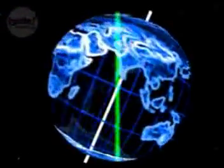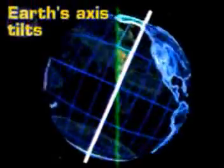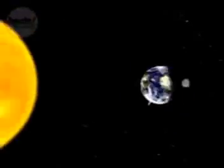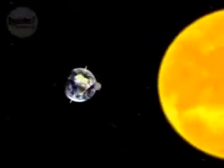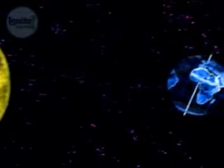A quick review of seasons. What causes Earth's seasons? Earth's seasons are caused by Earth's tilt on its axis. Instead of going straight up and down, Earth's axis tilts 23.5 degrees. Can you see why the tilt causes Earth to have seasons throughout the year? Let's find out.